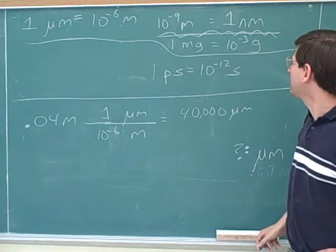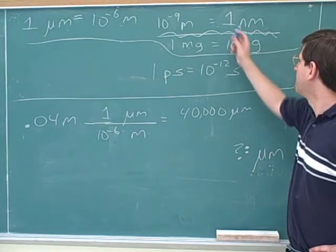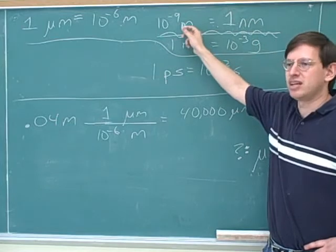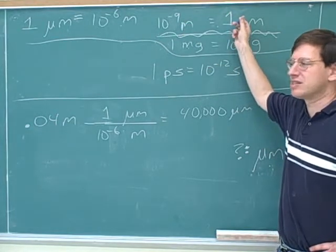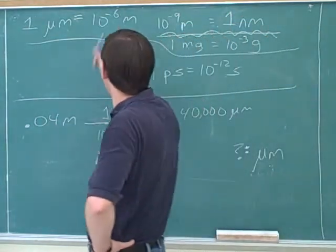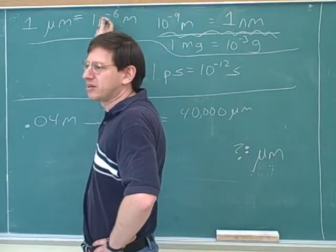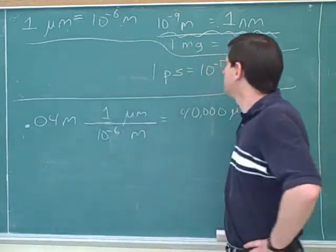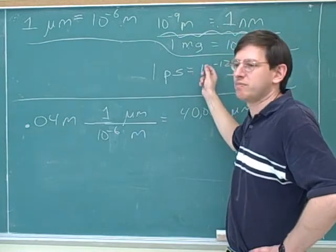So the same, you could have said that there's a billion nanometers in a meter. That would be another correct way to write this. Or we could have said that there's a million micrometers in a meter. But I think these are the most useful approaches because these are the ones that match the table.